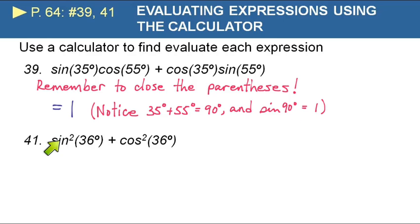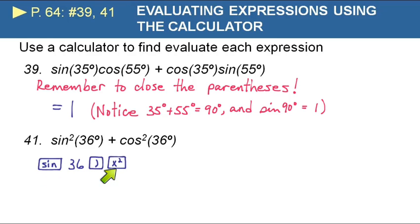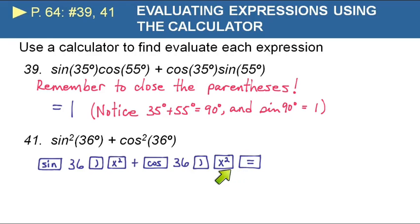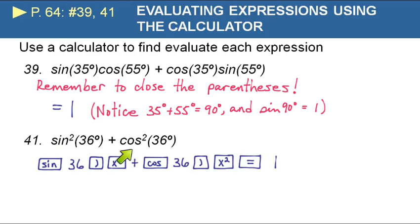For sine squared 36 plus cosine squared 36: enter sine of 36, close the parentheses, then square it; then cosine of 36, close parentheses, and square it. What you're squaring is the sine of 36 and the cosine of 36, not 36 itself. This equals 1 — which shouldn't be a surprise, since we have the identity sine squared of an angle plus cosine squared of an angle equals 1.